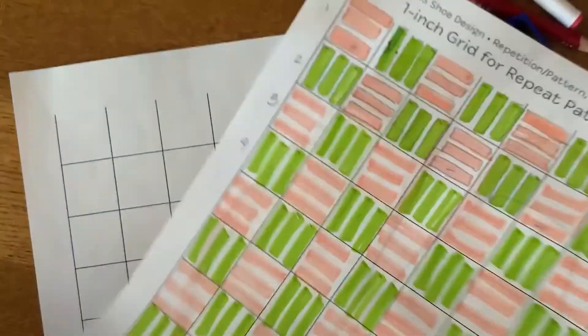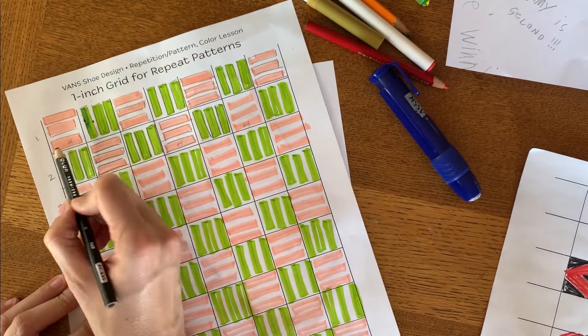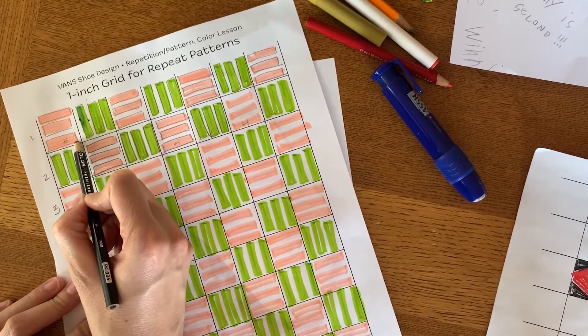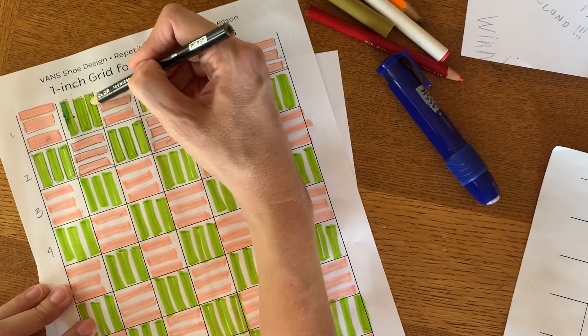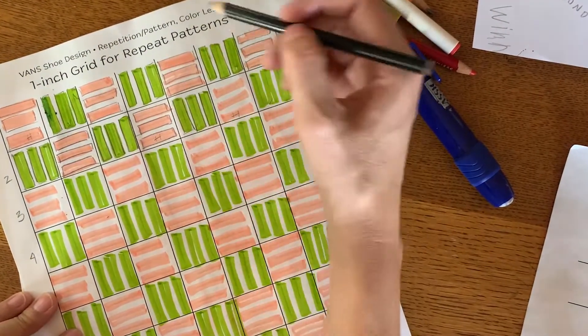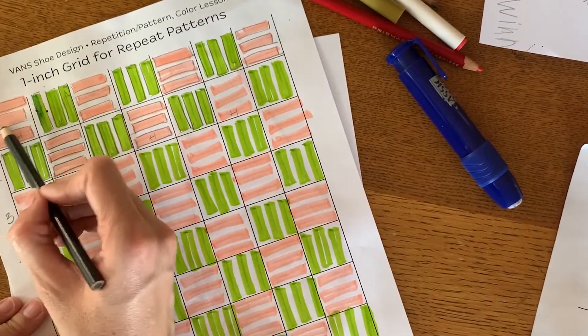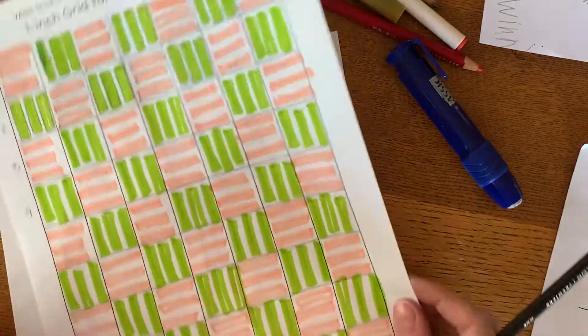On this one, it's just rectangles you guys. There's just three rectangles going horizontally and three rectangles going vertically. And then I just alternated the color. So the shape is the same, but the direction that the shape is facing changes and it just alternates throughout the entire design.